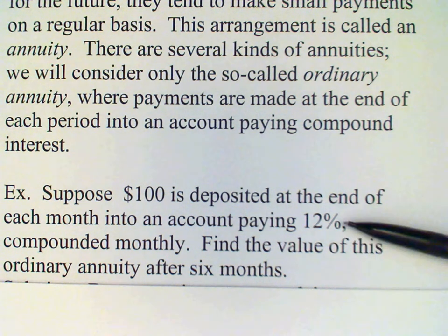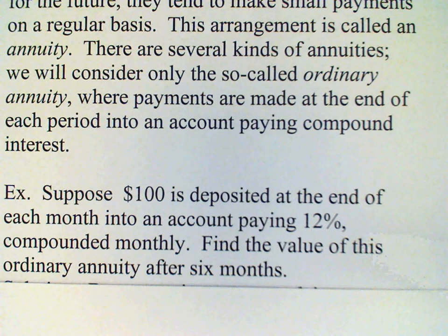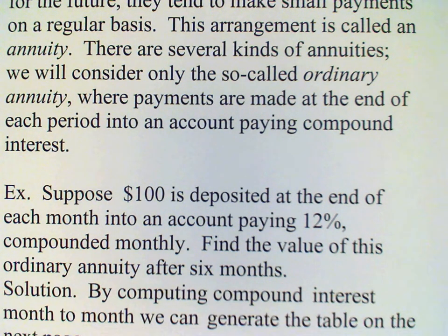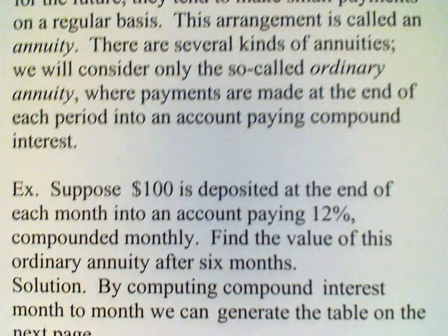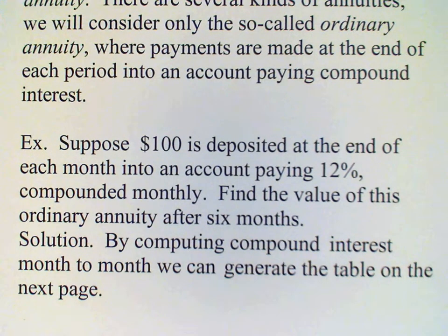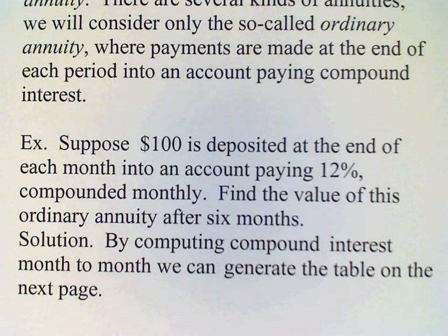Remember that the annual interest rate must be divided by 12 in order to get the interest rate per month, which in this case would be just 1%. And in order to calculate the value of this annuity after six months, all we really need to do is work it out month by month, calculating the interest and keeping track of the money that is deposited.